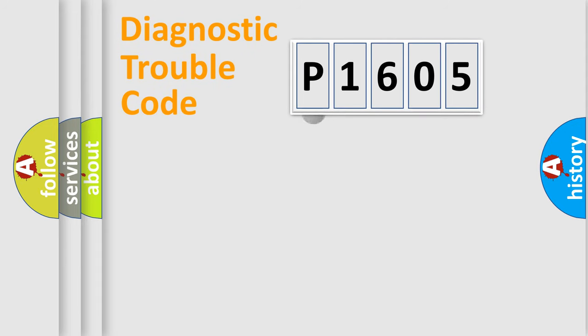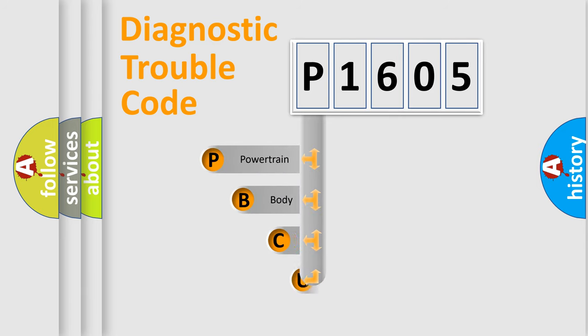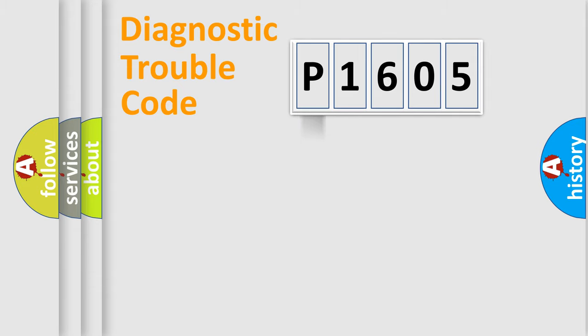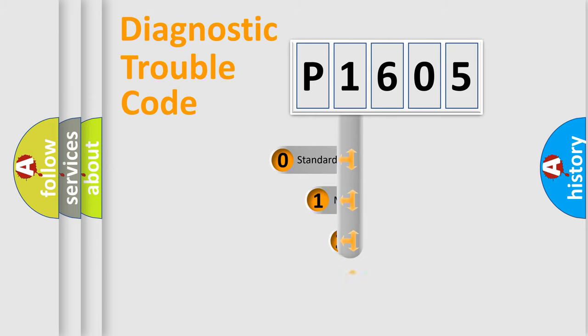First, let's look at the history of diagnostic fault code composition according to the OBD2 protocol. We divide the electric system of an automobile into four basic units: powertrain, body, chassis, and network. This distribution is defined in the first character of the code.